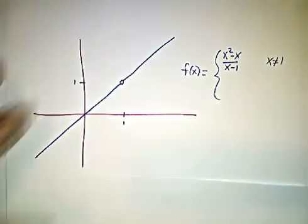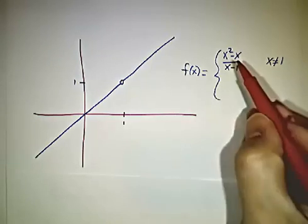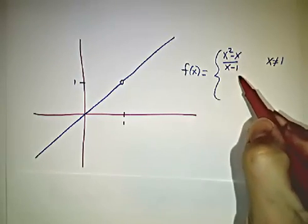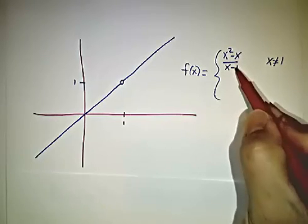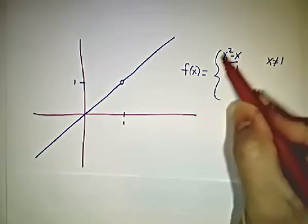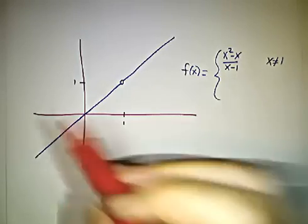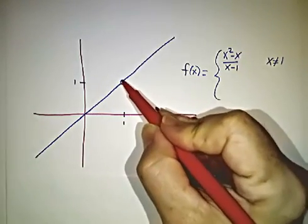The third important kind of discontinuity is where the two limits are the same. Like if you look at the function x squared minus x over x minus 1. It doesn't make sense that x equals 1, because that's dividing by 0. But everywhere else, this is equal to x. So we get this nice line going through this spot.